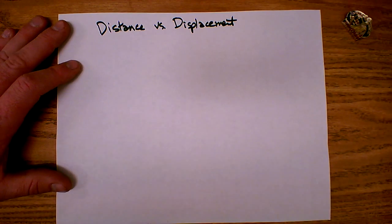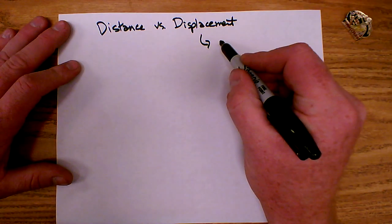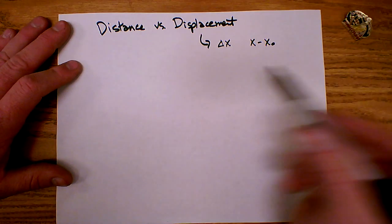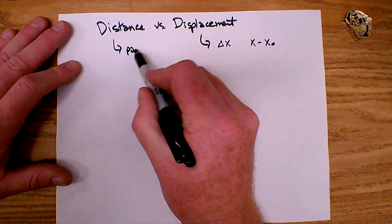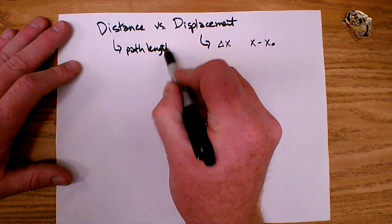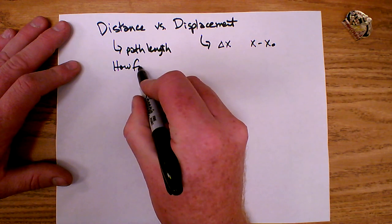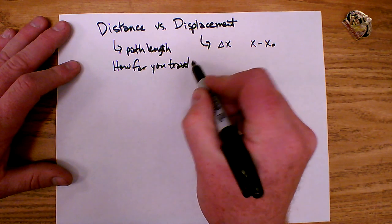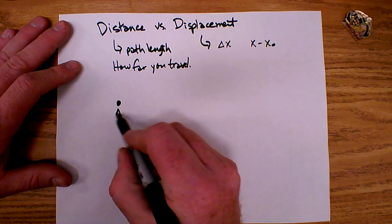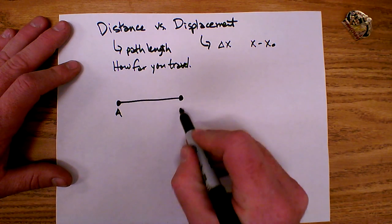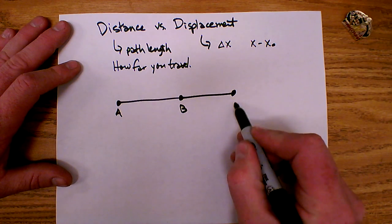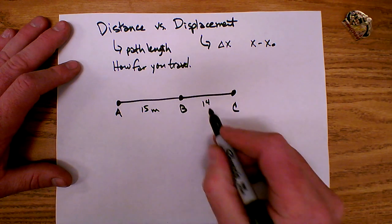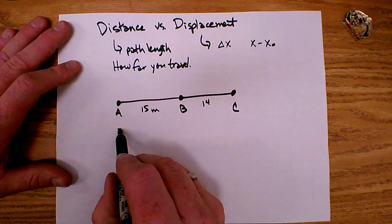Now I'd like to talk about distance versus displacement. We just learned that displacement is the change of position, which is the final position minus the starting position. Distance is a measure of the path length — in other words, how far you have to travel to get to your ending point. For example, if I started here at position A, and I went over to position B, and then over to position C — let's say this is 15 meters and this is 14 meters.